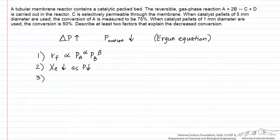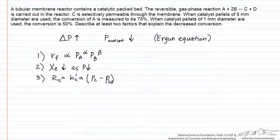Finally, this is a membrane reactor, and the flux — which I'll write as a capital R — the diffusive flux of component C out of the membrane will be equal to some pseudo mass transfer coefficient times a cross-sectional area, an area cross-sectional to the diffusion, times a driving force for diffusion, which will be the pressure of C in the reactor minus the pressure of C on the outside of the membrane, the permeate side. By decreasing the total pressure, we're going to ultimately decrease P_C, which will lower the rate of diffusion of C out of the membrane, and that will push the reaction more to the left by Le Chatelier's principle. So we see at least these three factors that could be responsible for the lower conversion.